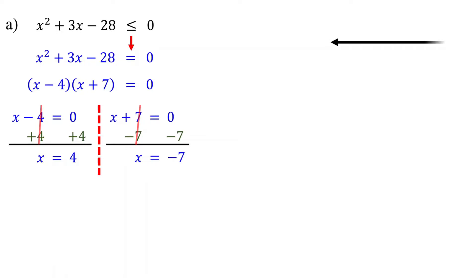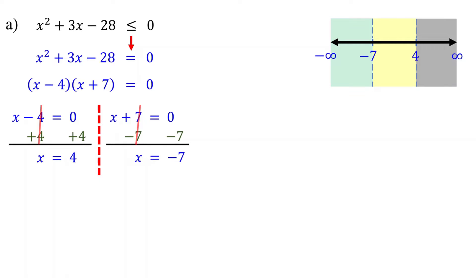Next, draw a number line and plot the solutions to the quadratic equation. On the left end, we have negative infinity. On the right end, we have positive infinity. Notice that our number line is divided into three intervals: less than negative 7, between negative 7 and 4, and greater than 4. Now, choose one test point from each of these intervals. For the first interval, we can use negative 8. For the second interval, let's use 0. For the third interval, we can use 5.